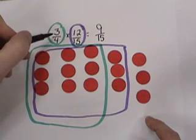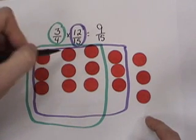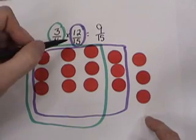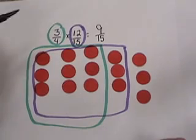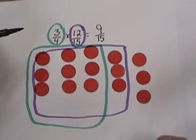The answer to our statement, 3 quarters of 12 fifteenths, or 3 quarters times 12 fifteenths, is 9 fifteenths.